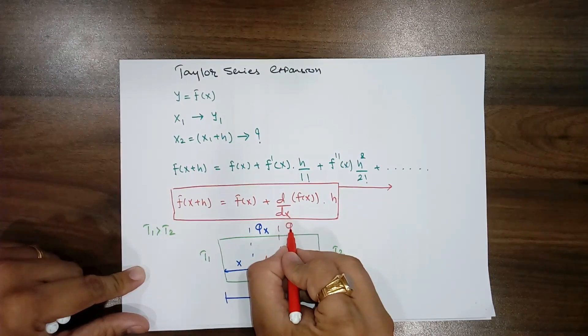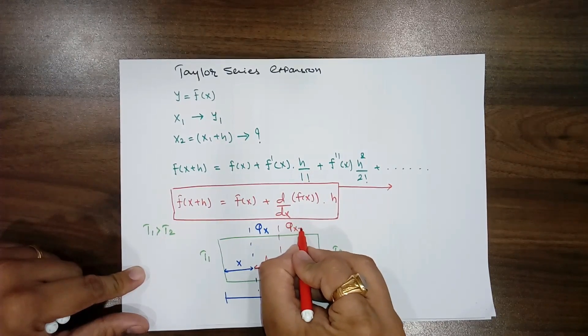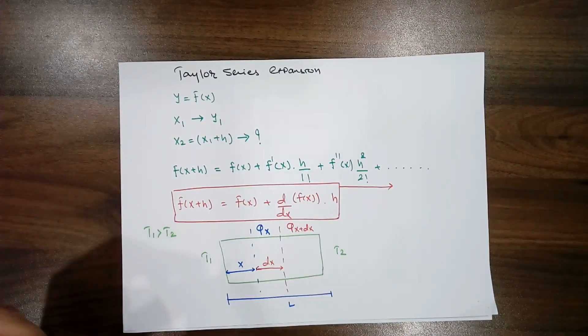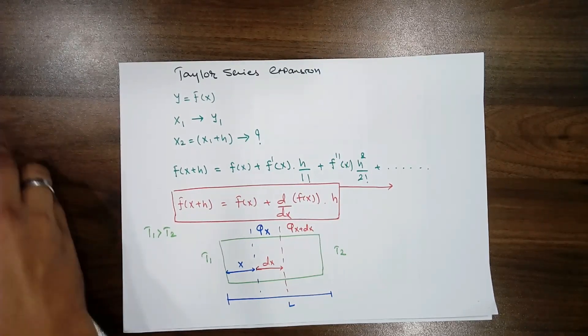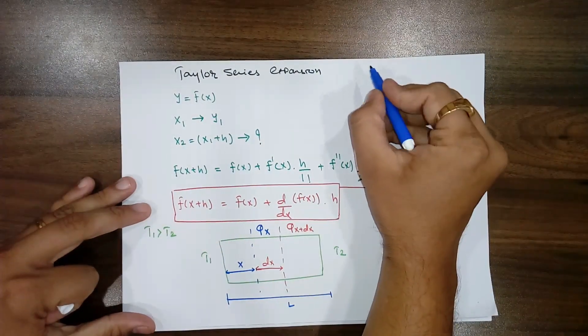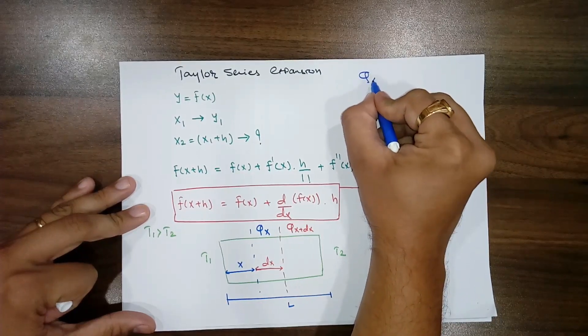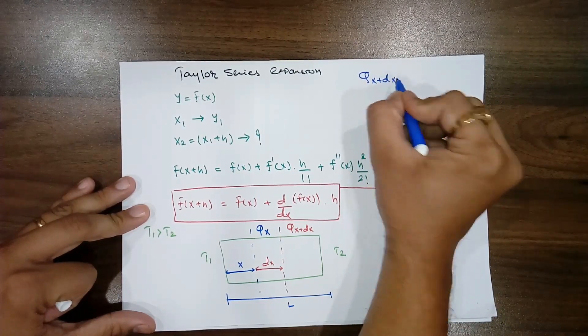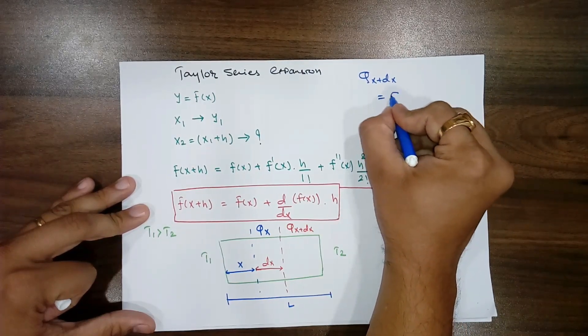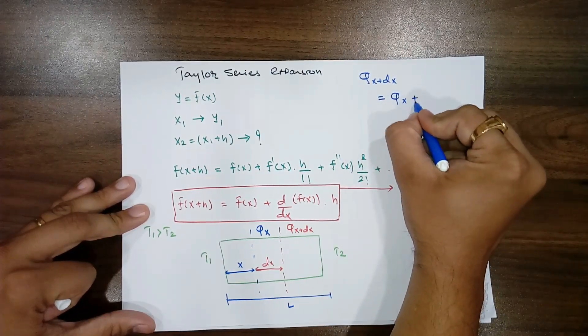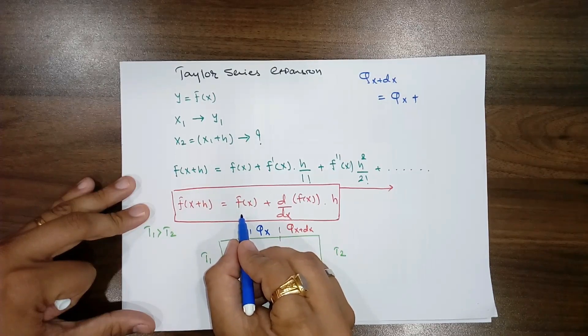So if the heat transfer is Qx plus dx, using this Taylor series expansion, you will be able to calculate the value of Q at x plus dx, which is equals to Q of x.